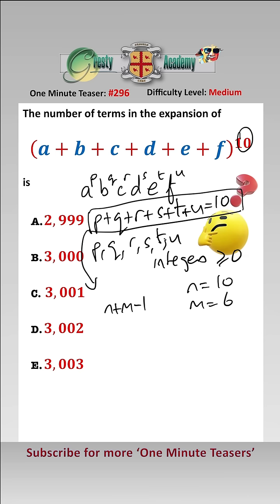And the solution to that is N plus M minus 1 choose M minus 1, which in this case is 15 choose 5, which equals 15 times 14 times 13 times 12 times 11 over 5 times 4 times 3 times 2 times 1.